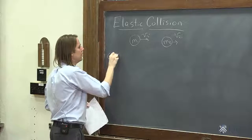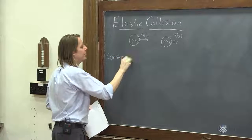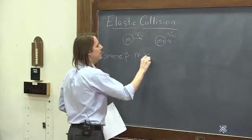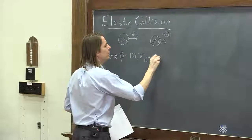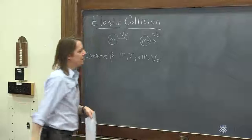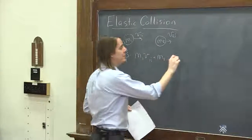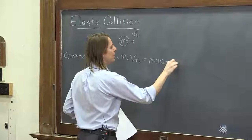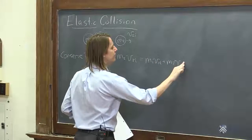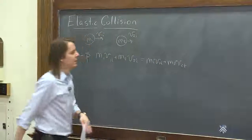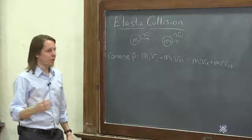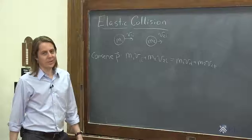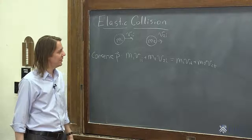We know we have to conserve momentum P. So that means M1·V1i plus M2·V2i — your initial momentum — must equal your final momentum: M1·V1f plus M2·V2f. That gives us one equation and two unknowns to solve for. Nothing is sticking together here, so we don't know that the final velocities are the same.